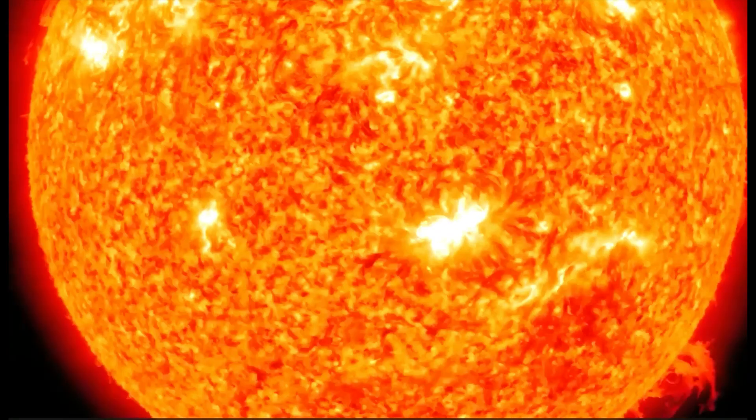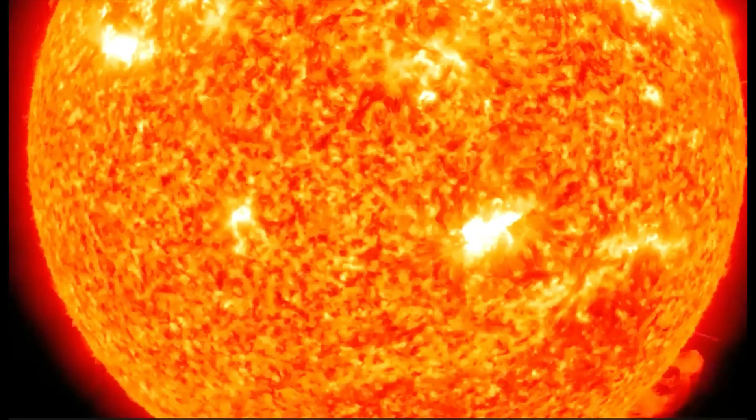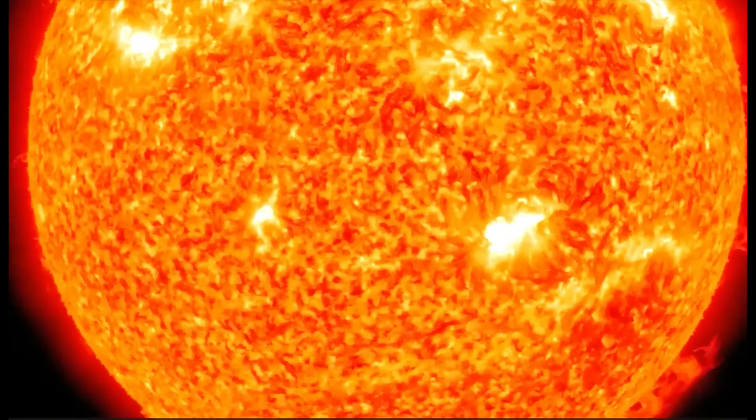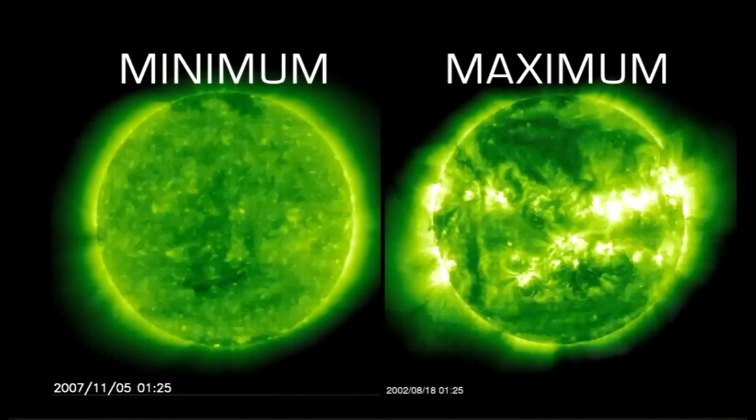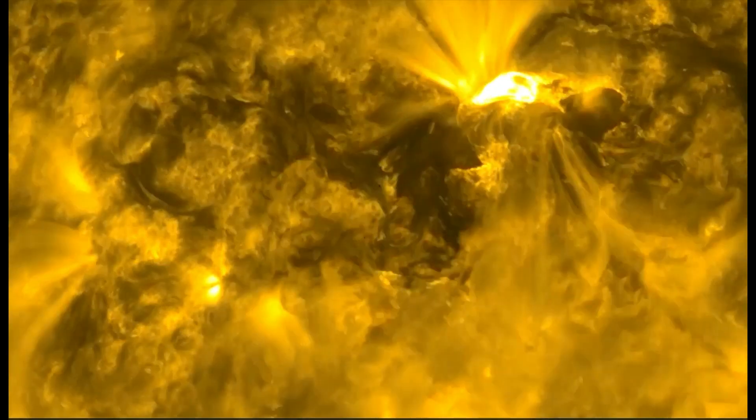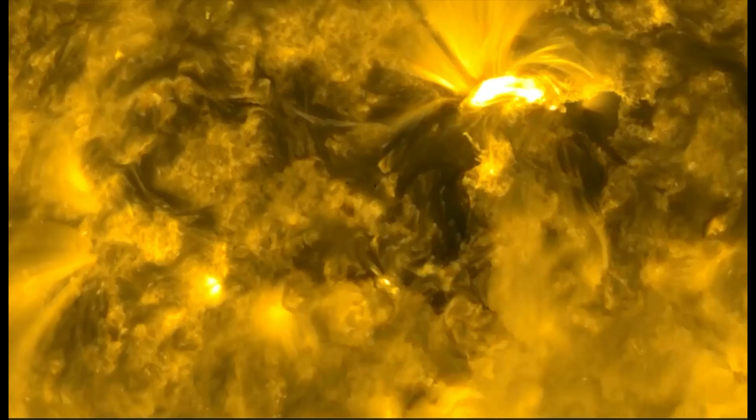Solar flares may seem like far away events, but they can damage satellites and even ground-based technologies and power grids. Every 11 years, as our Sun reaches its maximum activity they become bigger and more common, and that increases the chances that one will significantly affect Earth.